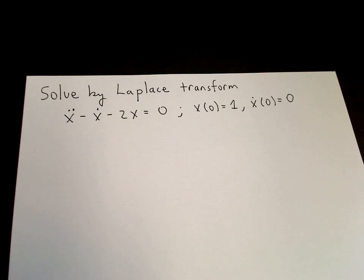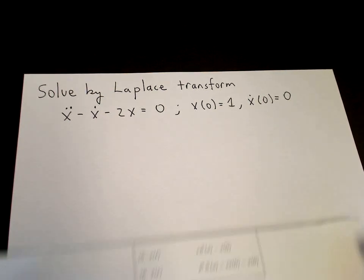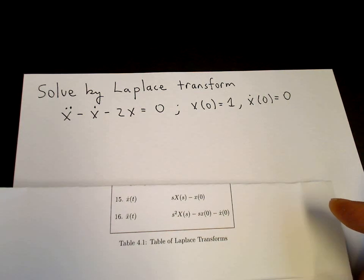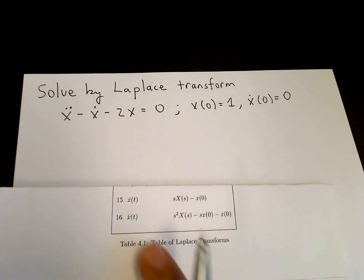So we take the Laplace transform of both sides of this equation and use the property of linearity. So let's see what do we have here. We take the Laplace transform of X double dot using the table.